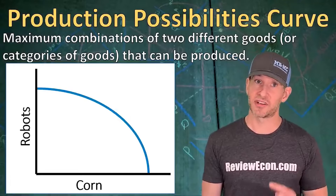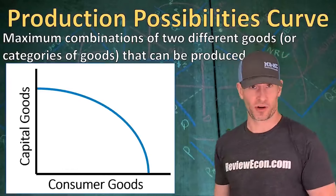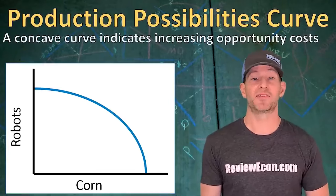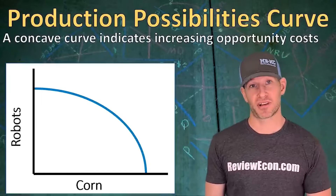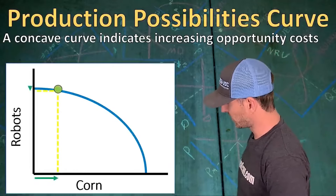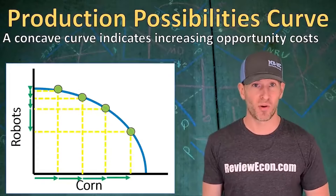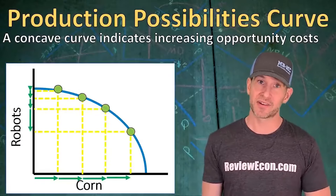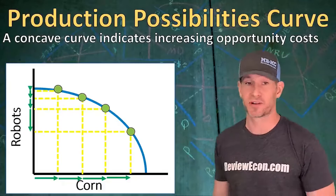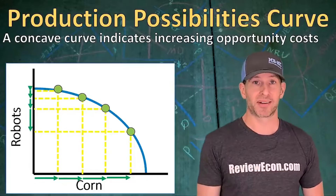Instead of specific goods, you could see this graph with categories like capital goods and consumer goods or guns and butter. When you see a bowed out curve that is concave to the origin, that will be an indication of increasing opportunity costs. As this economy produces more and more corn, the opportunity cost in terms of robot production increases as we move down that curve.